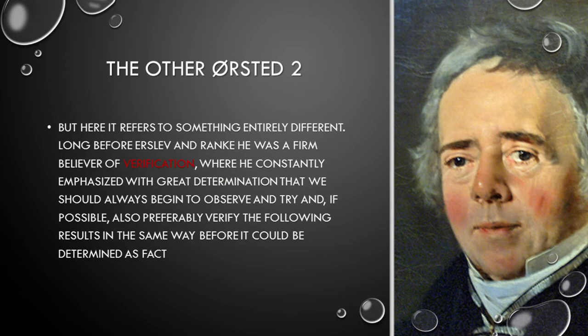Why did he say that? Because many of his scientist colleagues of that day were under the influence of the Romantic period — Romanticism. That meant they first stipulated things, then sought to have them verified. As you all know, if you stipulate 'I believe the Earth is flat' and when you look at the horizon you can see nothing, then it's probably flat. That's the kind of science he was up against — and that was also the kind of science that Ludwig Holberg was protesting against in the 1760s.